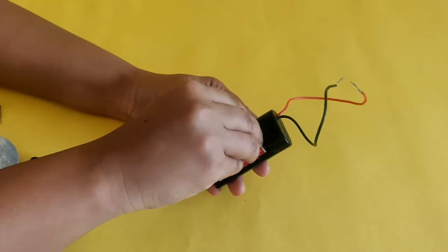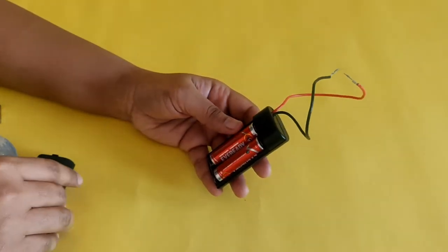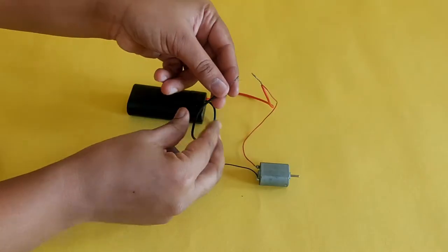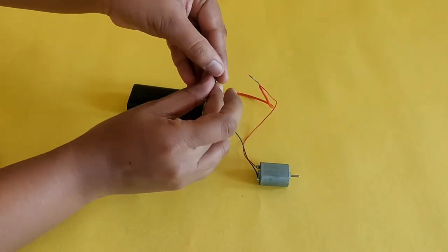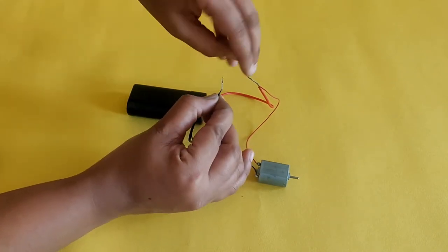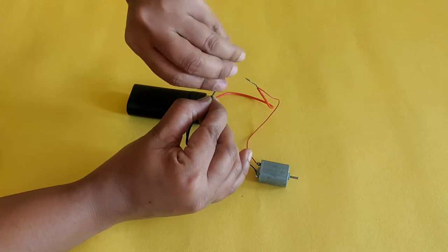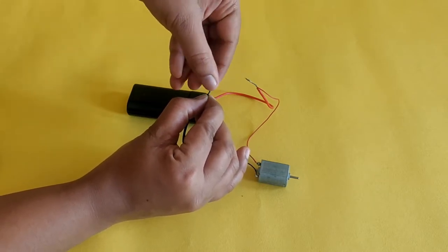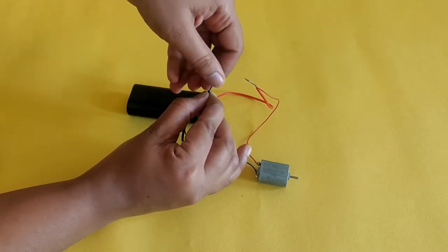Mount the two 1.5 volt batteries into the battery cell holder. Connect the positive lead wire from the battery cell holder to the positive lead wire from the toy motor, and the negative lead wire from the battery cell holder to the negative lead wire from the toy motor.